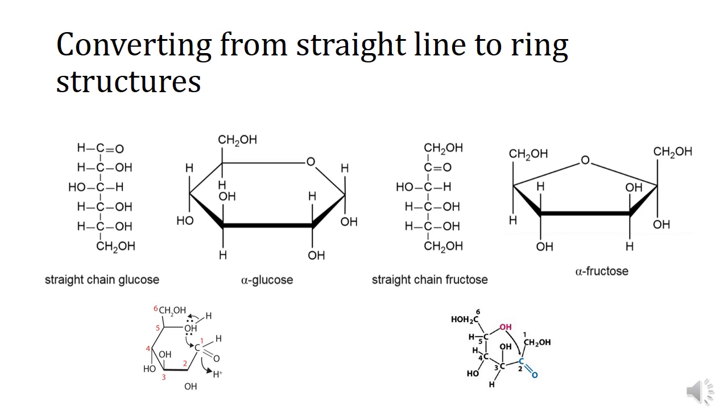All of these pictures up here, our ring forms and our straight forms, these guys are straight out of the data book. I grabbed these two images down the bottom from the internet somewhere. It's just showing that it is the position of that double bonded oxygen that makes a difference in terms of the structures we end up with. These ways of representing these ring forms are called Haworth projections.